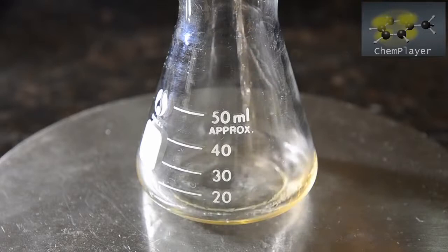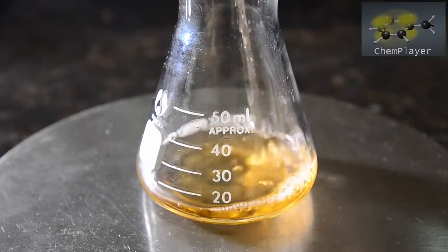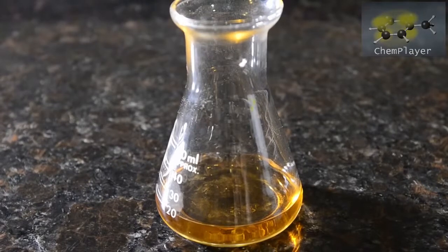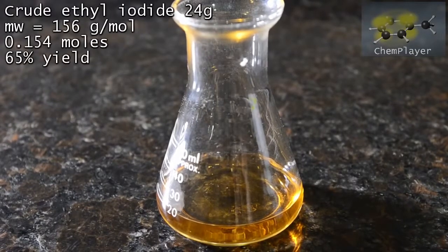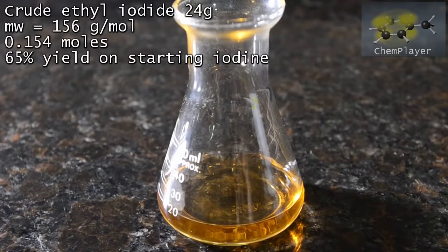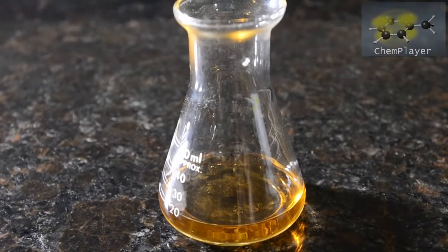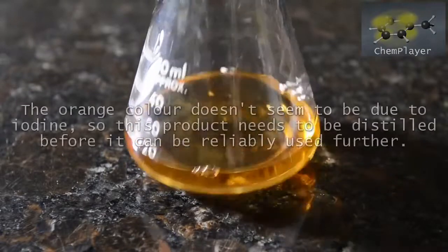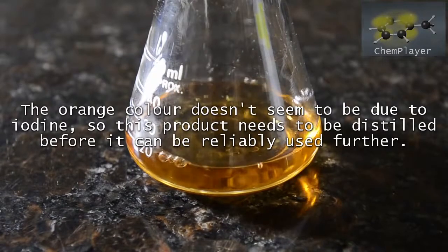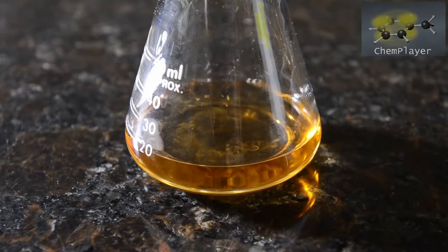We transferred this into another container for weighing. Here's the crude product: 24 grams of what seems to be fairly pure ethyl iodide, although it does have a yellow color and this doesn't seem to be due to iodine. This is a 65 percent yield from starting iodine. This is average, but the product is obviously not quite as pure as you obtain by using red phosphorus or from ethanol, potassium iodide, and phosphoric acid. But it was an interesting reaction and worth checking out.